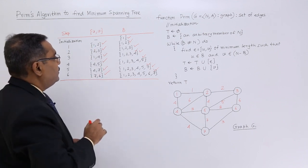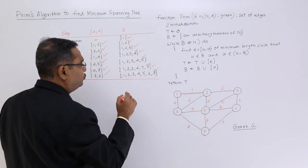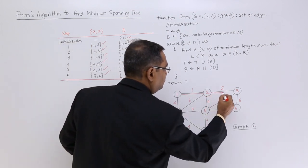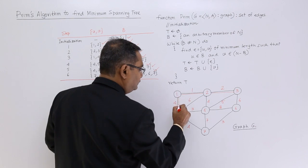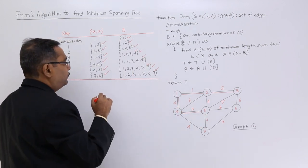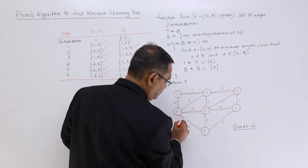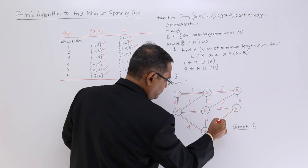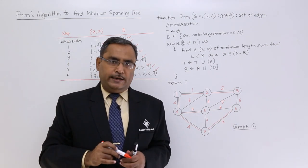What are the edges? That is my edges 1-2, 2-3, 1-4, 4-5, 4-7, and 7-6. This is my minimum spanning tree.